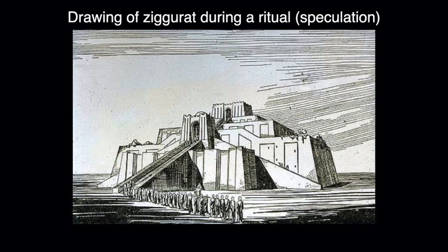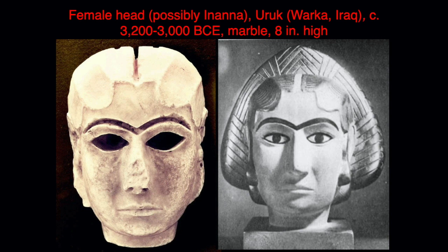Each Sumerian city-state had its own local god or owner, and also a human ruler who was the steward of that god, leading the people in worship. The steward-priest was responsible for maintaining peace and the food supply by carrying out the god's orders. The local god was supposed to advocate for the city and help control the forces of nature — the classic 'keep the gods happy so that we stay happy.' Inside these temples we found statues of gods and donors; this is possibly Inanna. The head is known as the Warka Head.